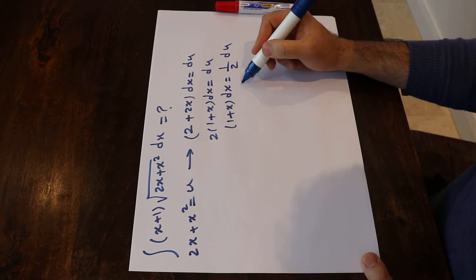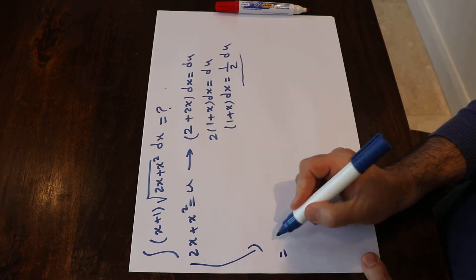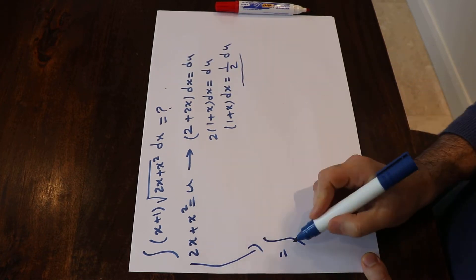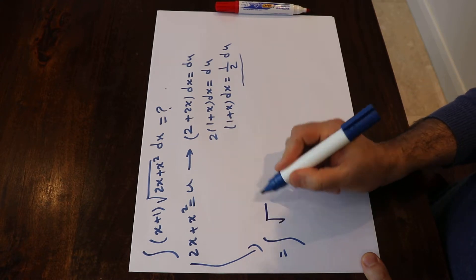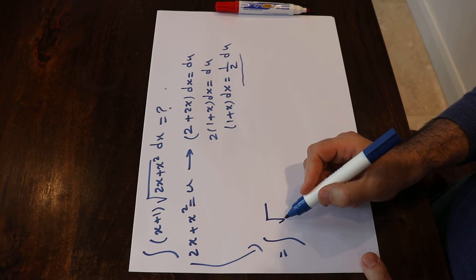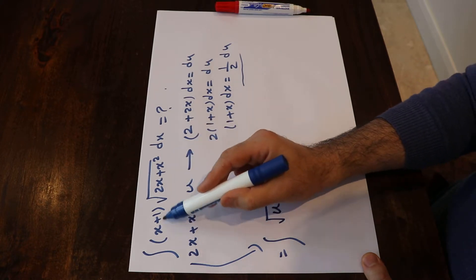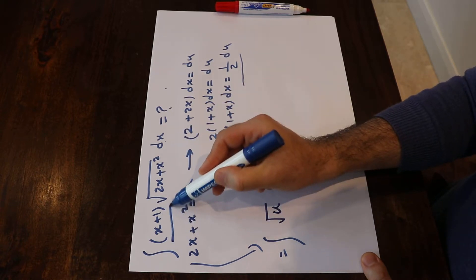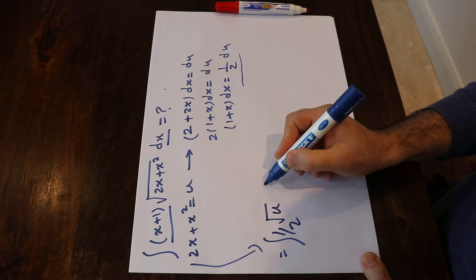So now if you substitute this expression into this integral and rewrite it, you can write this as equal to the integral of, instead of the square root of 2x+x², I simply write square root of u, because 2x+x² is u. And instead of (x+1)dx, I write ½du.